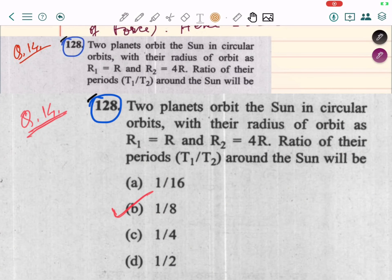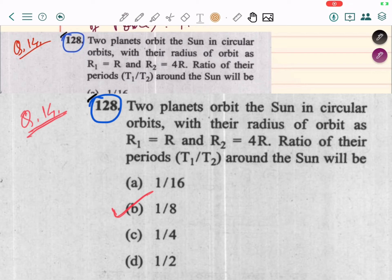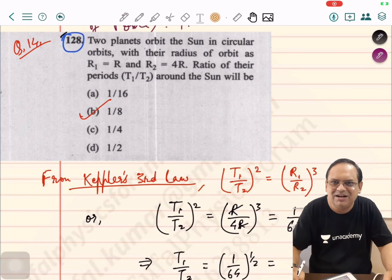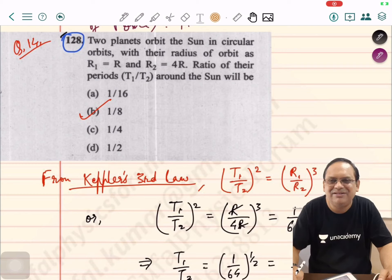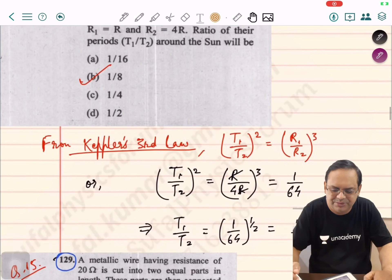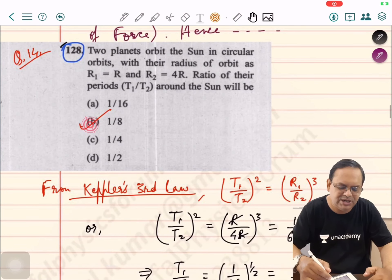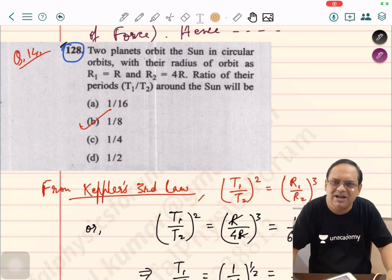Question number 14. Two planets orbit the Sun in circular orbits with their radius of orbit as R1 equals R and R2 equals 4R. Ratio of their periods T1 upon T2 around the Sun will be: recall Kepler's third law, which is T squared proportional to R cubed, where T is time period and R is semi-major radius. We have circular orbits with radius R1 and R2, which are R and 4R. Substituting, we get 1 upon 64. Option D is correct answer for T1 upon T2.